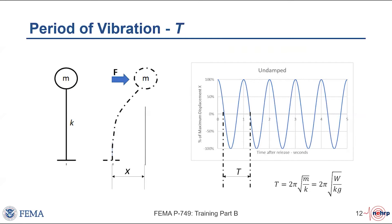The most important parameter in designing a structure for earthquake resistance is its period of response, formally defined as the amount of time in seconds that the structure, when in free vibration, will undergo one complete cycle of motion — from first zero crossing, through peak motion in one direction, second zero crossing, peak motion in the other direction, and back to rest. The fundamental period is given by 2π times the square root of the structure's mass divided by its stiffness, or equivalently, 2π times the square root of the structure's weight divided by its stiffness times g.